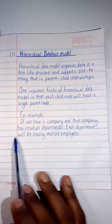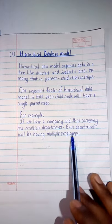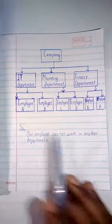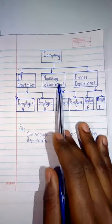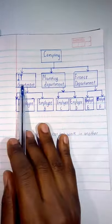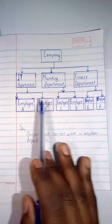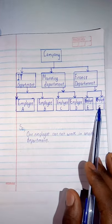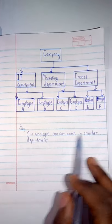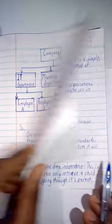For example, if we have a company and that company has multiple departments, each department will be having multiple employees. So this is an illustration here: I'm having my company and I'm having different departments - IT department, marketing department, and finance department - whereby I'm having employee A, B, C, D, E, and F. So one employee cannot work in another department.